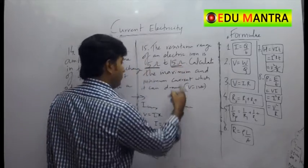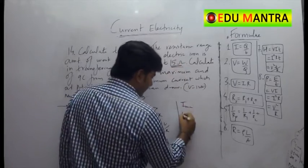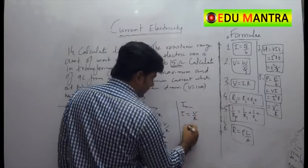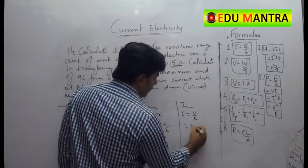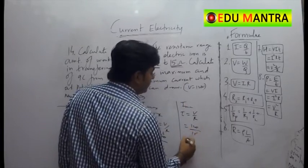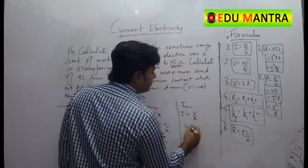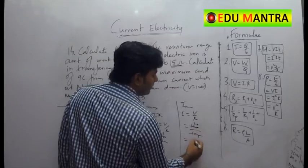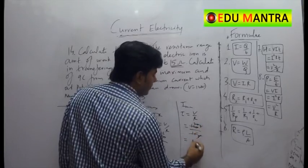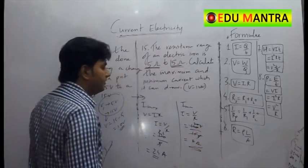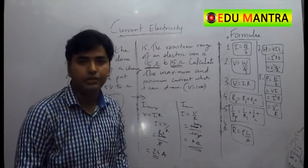So for that, we will have to use the maximum resistance that is 15. Again, the same formula. I is equal to V by R, which is 120 by 15. So it will be around 3, 5's are 15. 3, 4's are 12. So it is 5, 8's are 40. 8 ampere is the minimum current which it can draw.